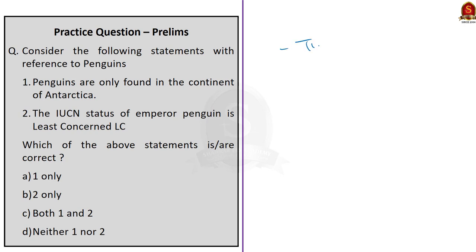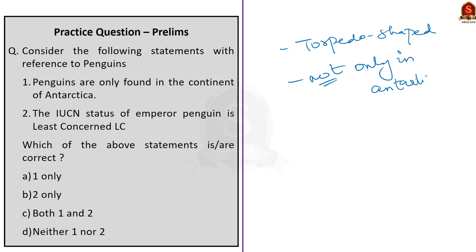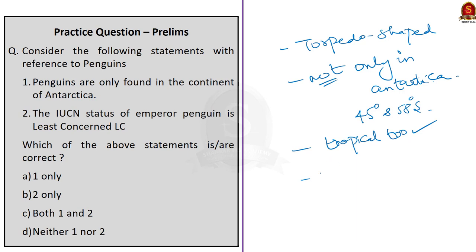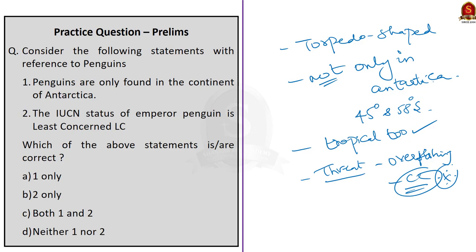Penguins are sadly one of the most threatened groups of seabirds, with half of the 18 species listed by BirdLife International as either vulnerable or endangered. In the IUCN Red List, some species are listed as least concerned, some as near threatened, and some as vulnerable, all due to decreasing population. Necessary actions should be taken to conserve the species.